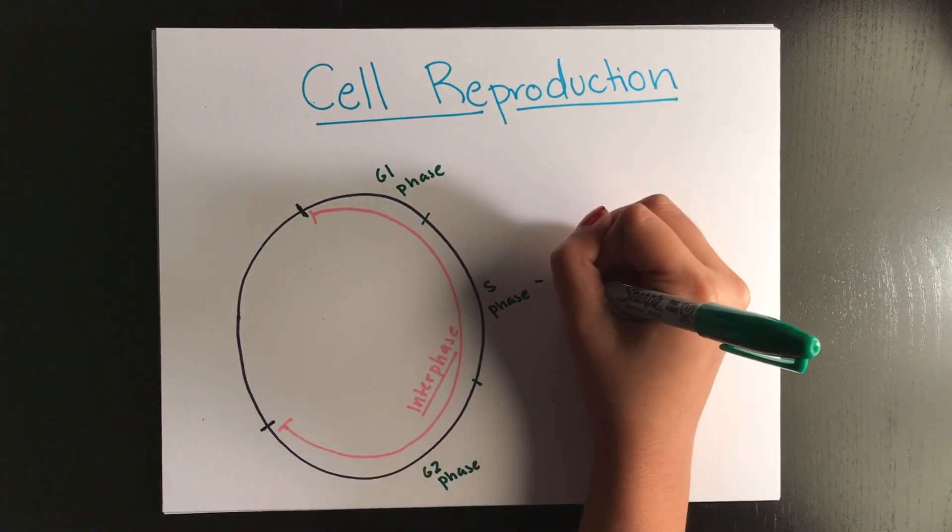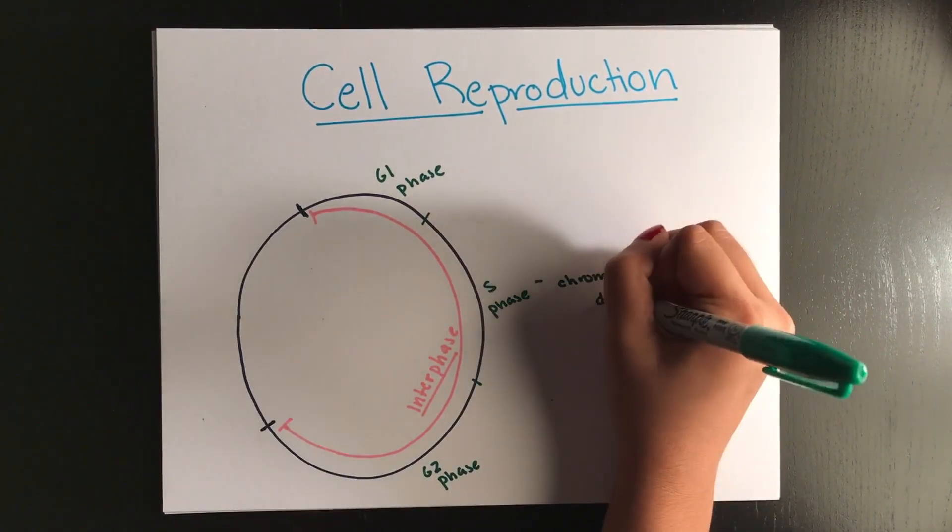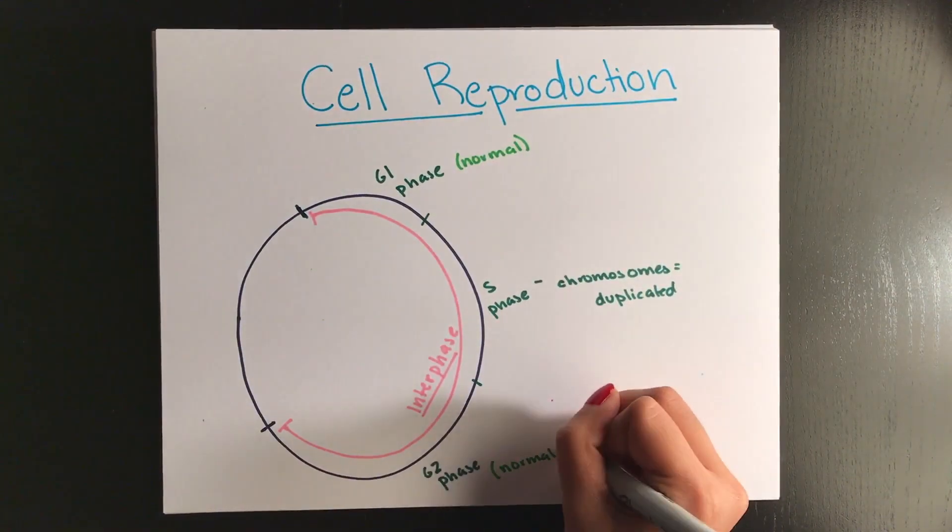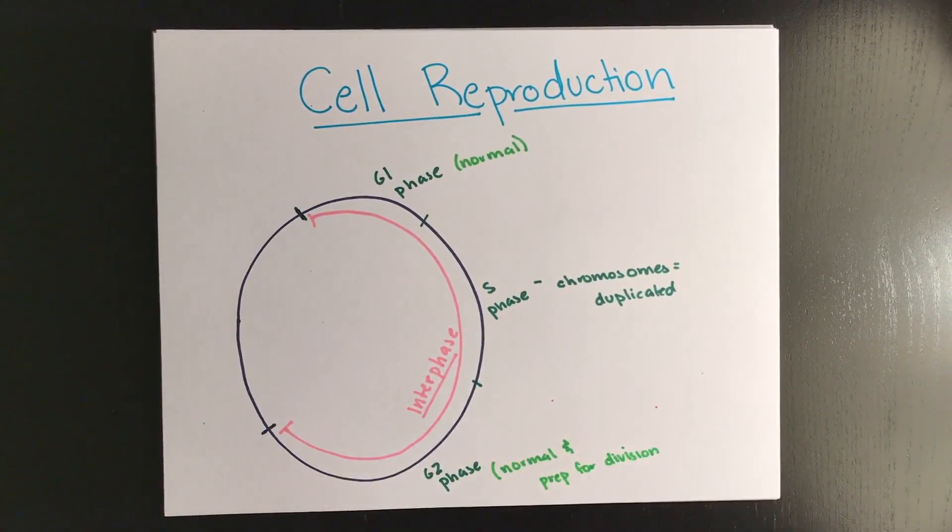The specific phase where the chromosomes are duplicated is called the S phase. The other two phases are the G1 and G2 phases where the cell just grows, and in the G2 phase it'll create some of the necessary organelles for replication.